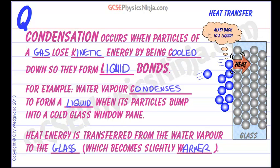And you can see a diagram of what's going on here. A gas water molecule in the air is hitting a cold glass window, and its heat energy moves into the glass. It becomes a liquid and therefore makes liquid bonds — and that's the water droplet you see on the outside of the glass. So condensation is all about a gas turning into a liquid.